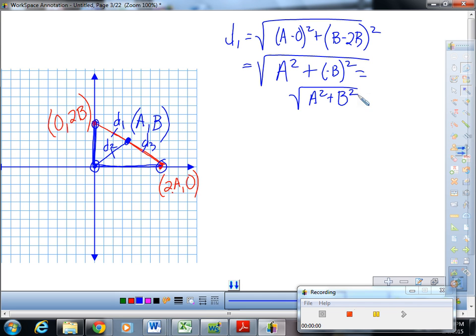So, now we have the length of D1, and we're just simply trying to show that D2 and D3 have the same length. Well, D2 is equal to the square root of, let me look. Nice. This is the point 0, 0. So, I can go straight to A squared plus B squared. Did you follow that? A minus 0 is A. B minus 0 is B. Got it?